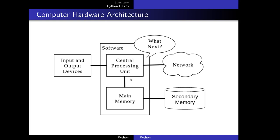Main memory is where we store the information that the CPU needs in a hurry. It is almost as fast as the CPU. But the disadvantage of main memory is that we lose the information stored there when we power off the computer. Then we have input/output devices that we use to interact with the computer. These include keyboard, mouse, monitor, speakers, and microphone.